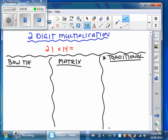So let's take a look at the bowtie method. We've got our equation here, and our equation is 21 times 14. Well, both the matrix and the bowtie method use what's called partitioning, which means we're going to split the numbers up. And what we know is that 21 is really the same as saying 20 plus 1, and 14 is the same as saying 10 plus 4.